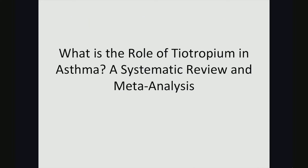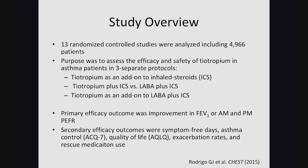I looked at a systematic review and meta-analysis titled 'What is the Role of Tiotropium in Asthma?' The meta-analysis was conducted with 13 randomized controlled studies and included 4,966 total patients. Its purpose was to assess strictly the efficacy and safety of tiotropium in asthma patients using three separate protocols: tiotropium as an add-on to inhaled corticosteroids; tiotropium in combination with an inhaled corticosteroid versus a long-acting beta agonist plus inhaled corticosteroid; and tiotropium as an add-on to long-acting beta agonists plus inhaled corticosteroid. The primary efficacy outcome was improvement in forced expiratory volume or peak expiratory flow rate, with secondary outcomes including symptom-free days, asthma control, quality of life, exacerbation rates, and rescue medication use.